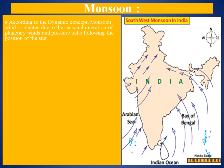Winds organize due to the seasonal migrations of planetary winds and pressure belts, following the positions of the sun during the solstice. The sun's rays fall vertically over the Tropic of Cancer; therefore, all the pressure and wind belts of the globe shift northwards. The Inter-Tropical Convergence Zone (ITCZ) also moves northward, and the major part of the Indian landmass comes under the influence of southeast trade winds.